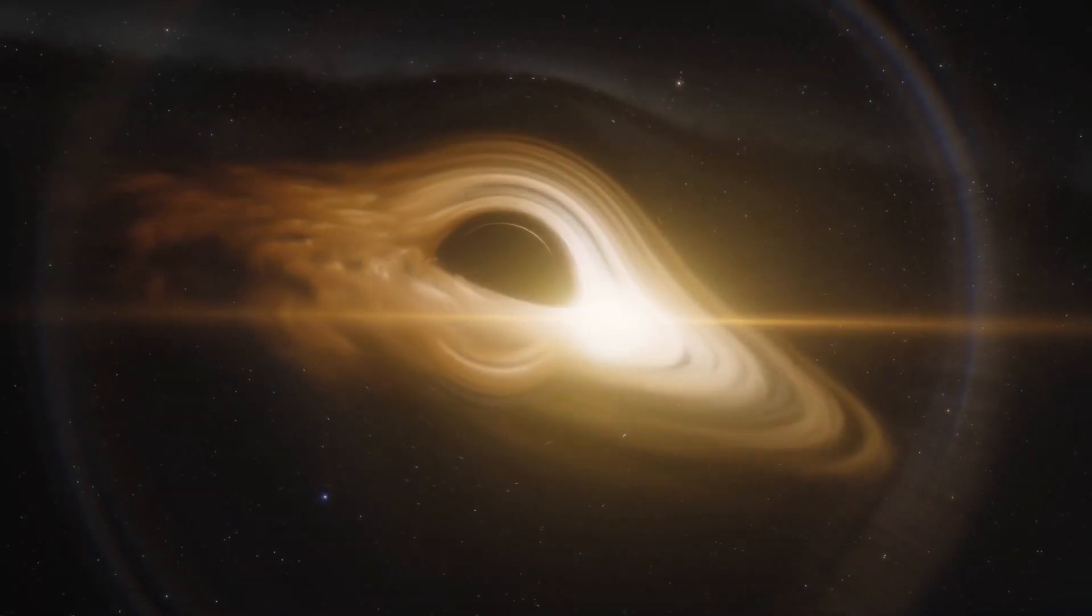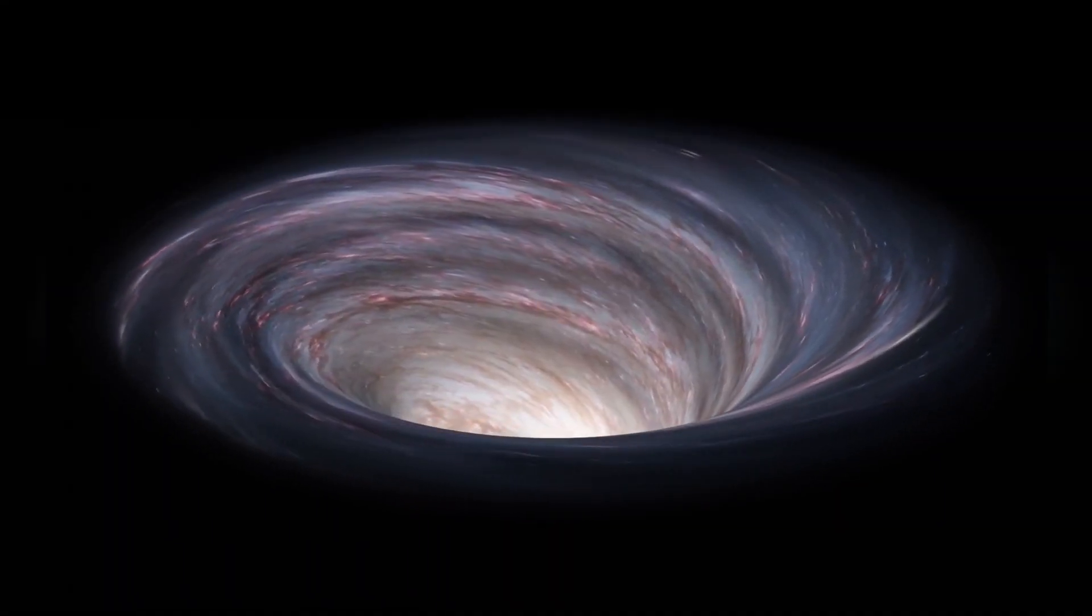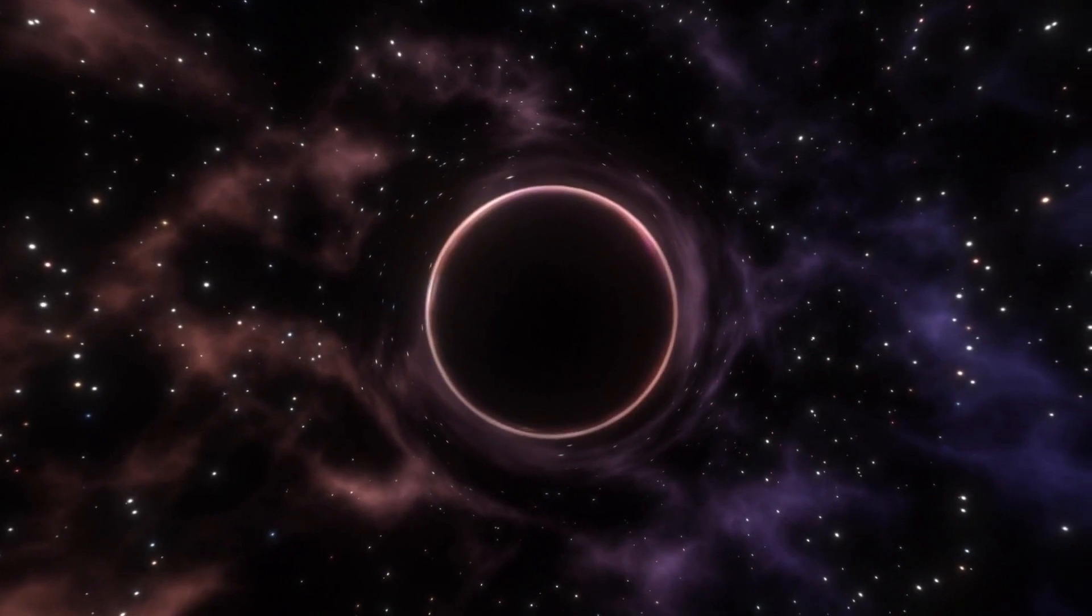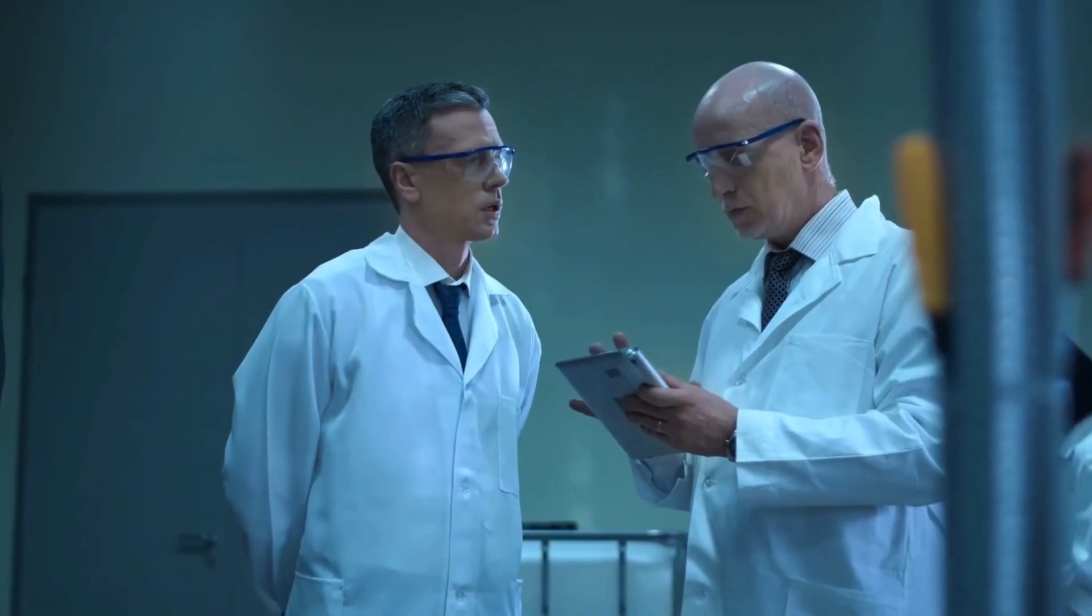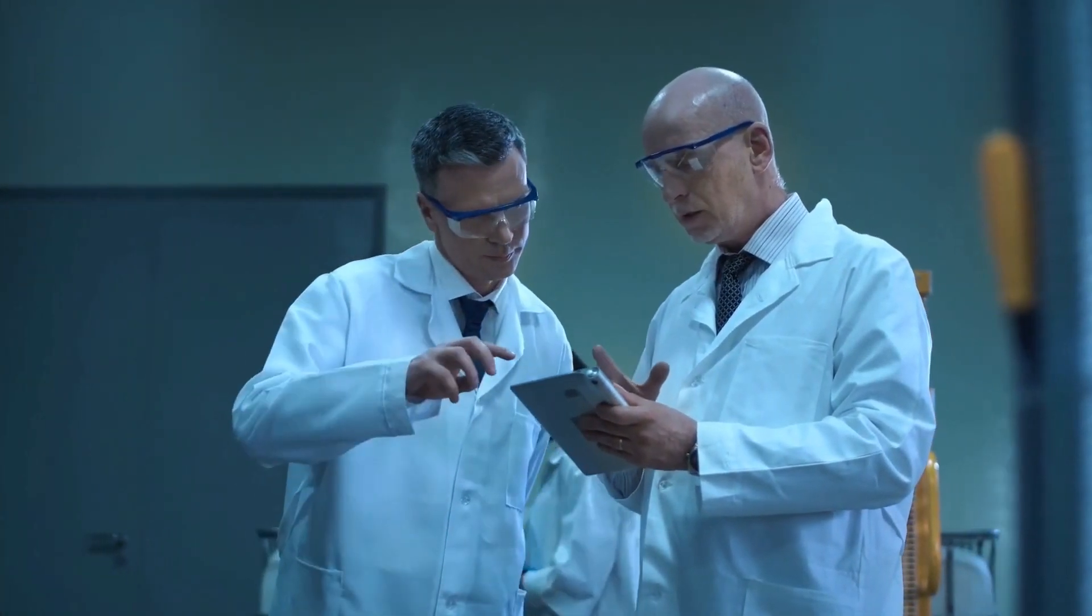Black holes are believed to form when massive stars run out of fuel and their cores collapse under the weight of their gravity, creating a black hole where the star once stood. Despite Einstein's prediction, black holes remained a theoretical concept for many years, with some scientists remaining skeptical of their existence.